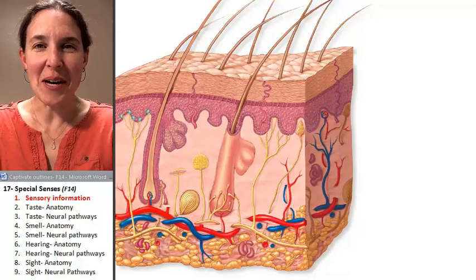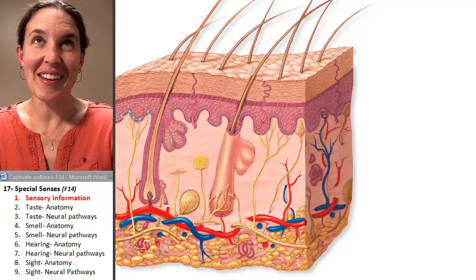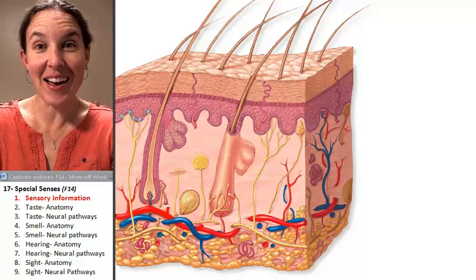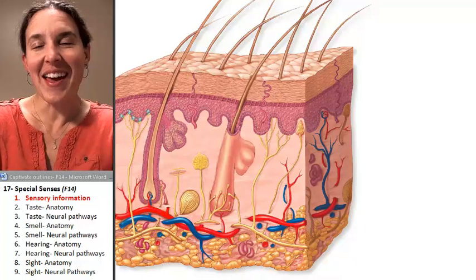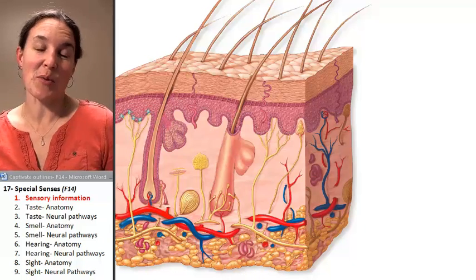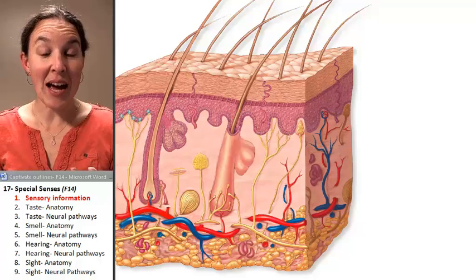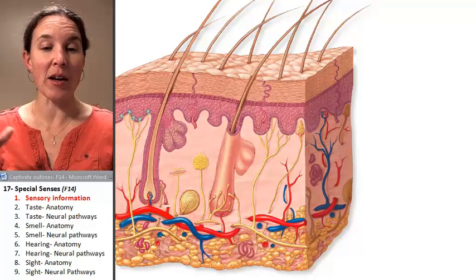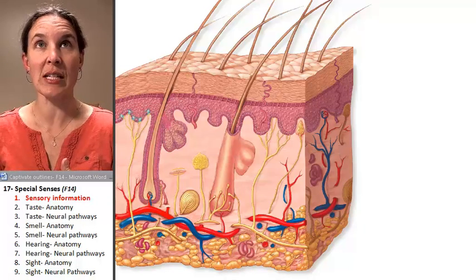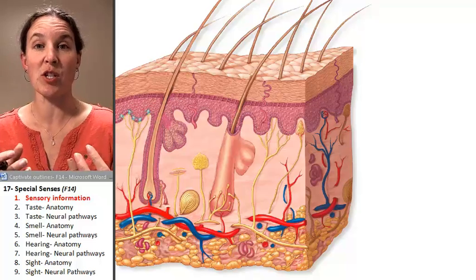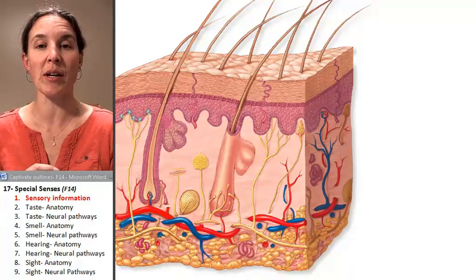We're here to talk about the nervous system. We're going to talk about special sensory systems — the anatomy and the neural pathways involved in receiving information from special sensory organs.